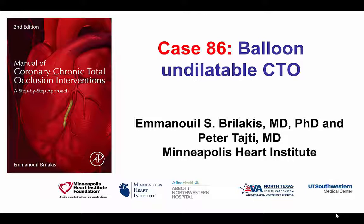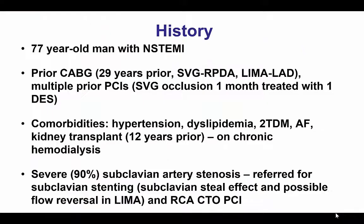This is a case of a balloon undilatable CTO. The patient had previous coronary bypass graft and presented with a non-ST elevation myocardial infarction. He had a LIMA to LAD as well as a vein graft to the posterior descending artery that was nearly 30 years old. The vein graft had occluded a month prior and was recanalized with one drug-eluting stent. The patient was on dialysis and was referred for intervention of a significant left subclavian stenosis lesion as well as intervention of the right coronary artery native CTO.